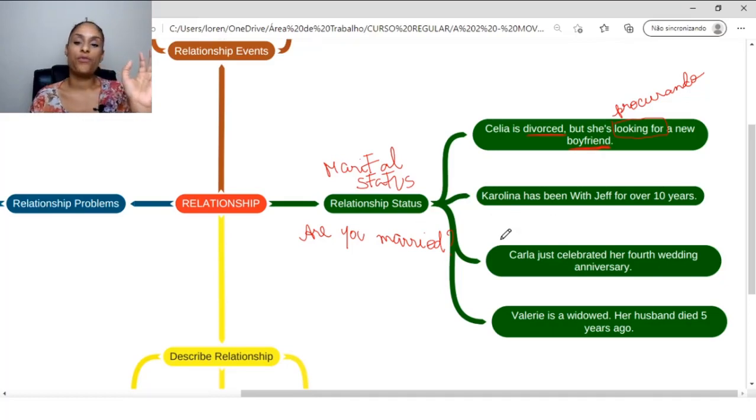What about Carolina? Carolina has been with Jeff for over ten years. This for over is like, for more than. More than ten years. This has been with means that Carolina started in the past with this person and is still with this person. We are going to see this verb tense known as present perfect in this module. So, Carolina has been with Jeff for over ten years. She's been with Jeff, so Carolina has been with Jeff for more than ten years.